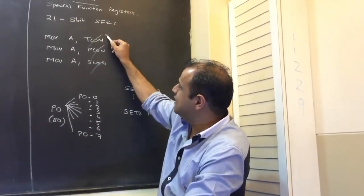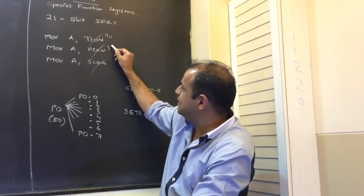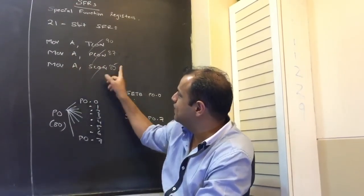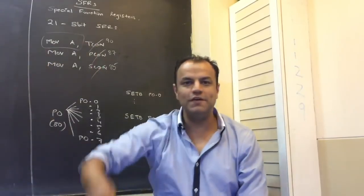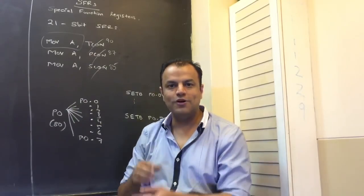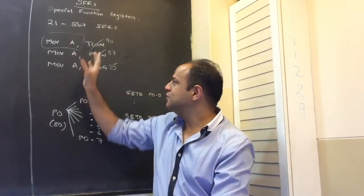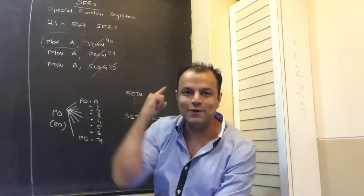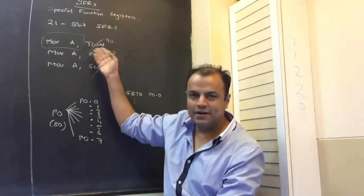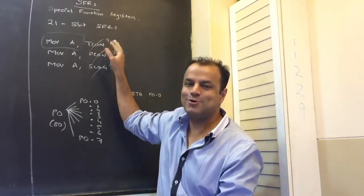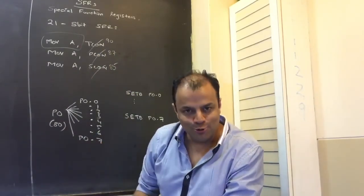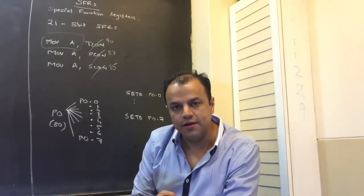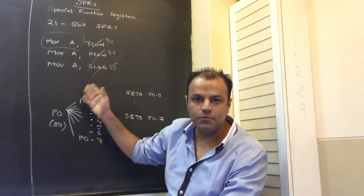So let's say TCON has address 88, SCON has address 98, etc. This instruction becomes MOV A, 90 or MOV A, 87 or MOV A, 85. Now there is an opcode only for MOV A — a number is never part of an opcode, it is written as an operand. So this is the opcode, and the address is the operand. All 21 SFRs can be used with only one opcode. Everyone who learns 8051 knows SFRs are given addresses, but very few students understand why — they are given addresses to reduce the number of opcodes.